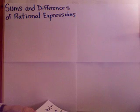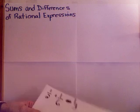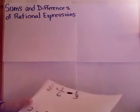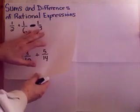This next section is on sums and differences of rational expressions. Basically, adding and subtracting fractions that do not have common denominators. Here's a couple examples here.